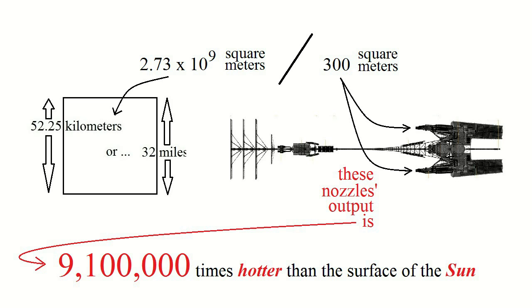But in fact, I was being overly generous. The engines must actually output over twice that energy, or 18 million times the sun's output per unit area. The reason is as follows.